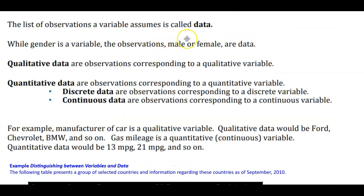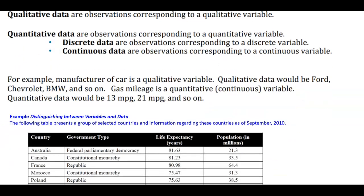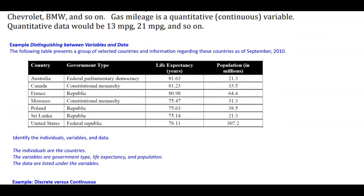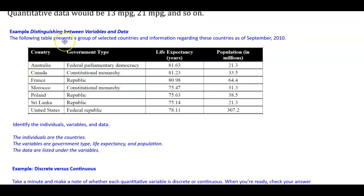The list of observations a variable assumes is called data. While gender is a variable, the observations 'male' or 'female' are data. Qualitative data are observations corresponding to a qualitative variable. Quantitative data are observations corresponding to a quantitative variable. Discrete data correspond to a discrete variable; continuous data correspond to a continuous variable. For example, the manufacturer of a car is a qualitative variable, with data being Ford, Chevrolet, BMW, and so on. Gas mileage is a quantitative continuous variable, with data being 13 miles per gallon, 21 miles per gallon, and so on.